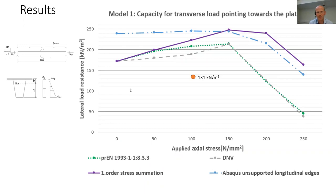The results of this research are shown here. We checked different axial levels from 0 to 250 Newton per square millimeter. The vertical axis here is the maximum lateral load we could put on the model when it had 100% utilization. We can see here that the blue one, ABAQUS, predicts the highest resistance over the whole range. We have the pink one, which is our first-order stress summation. That's just to get something to compare with. The gray one here is DNV, and the green one is Eurocode, and they are quite similar over the whole range.